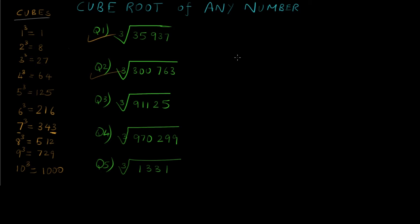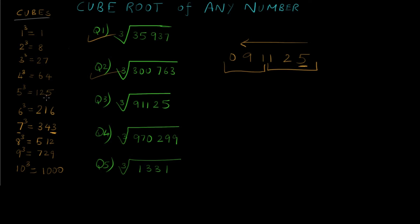Now let's find out the cube root of 91125. Starting from the right I make groups of 3: the first group is 125 and the second group is 091, with a 0 extra for pairing. The units place of the first group is 5, and the cube with units digit 5 is 125, which is 5 cubed. So the first digit is 5. For the second group, the cube closest to and less than 91 is 64, which is 4 cubed. So the second digit is 4, giving the answer 45. Indeed, 45 cubed equals 91125.